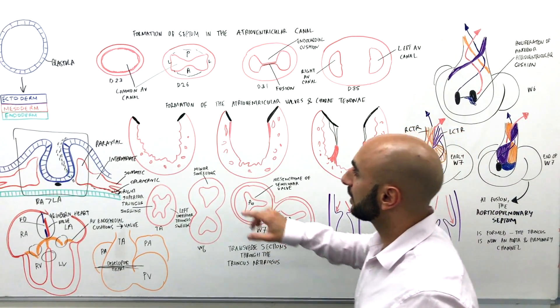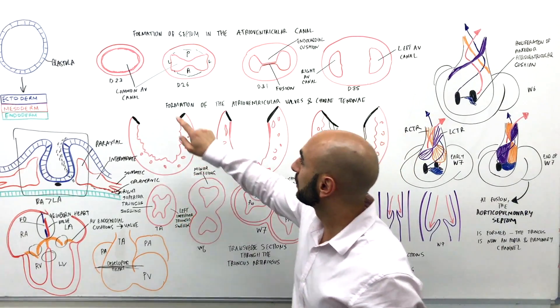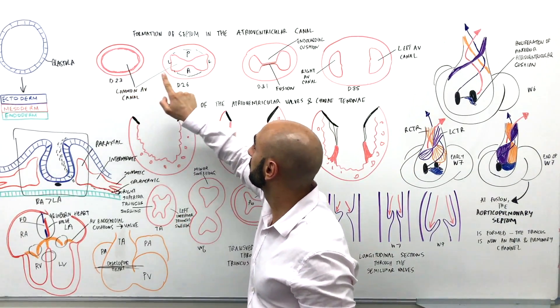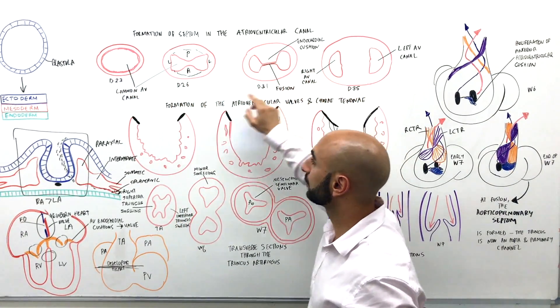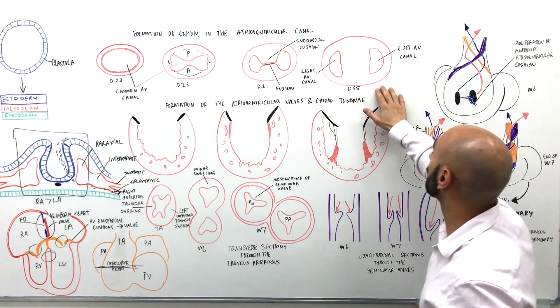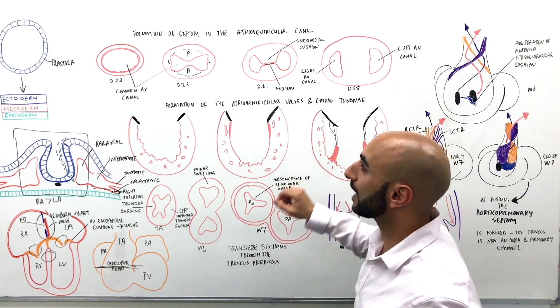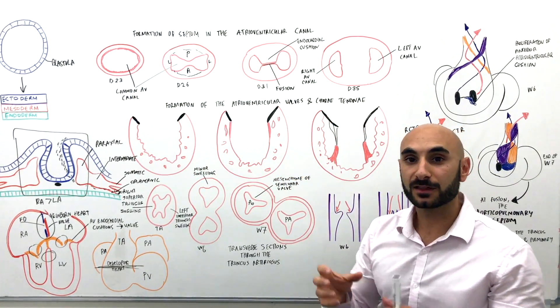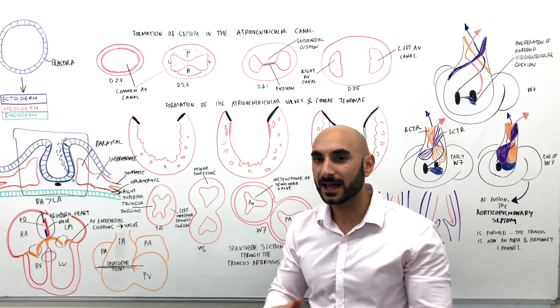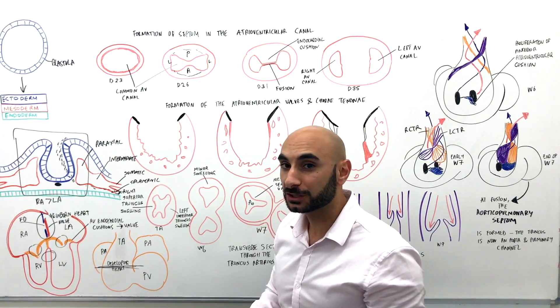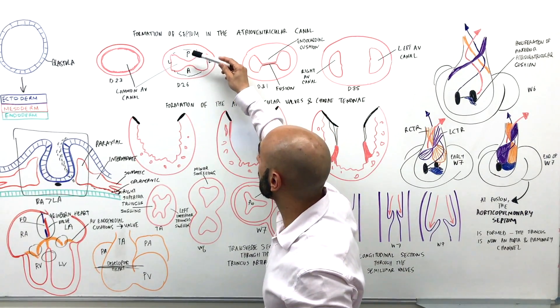All right, so let's have a look at the atrioventricular canal. And again, don't let it scare you, just think about it as step 1, 2, 3, 4 from day 23 to day 35. So in the period of this time, you'll have one canal going to two canals.